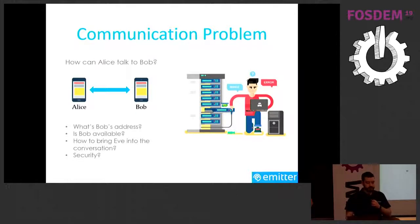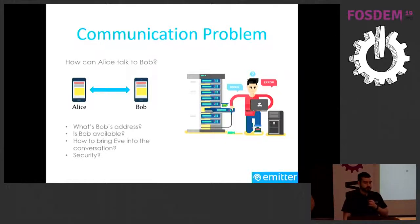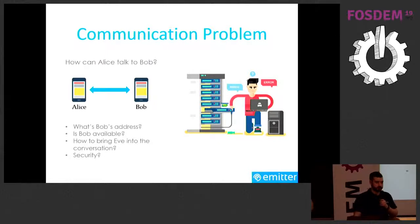More problems arise if more people want to join the conversation. In a group conversation with a third, fourth, or fifth person, everybody has to know the address of everybody else, and everybody has to remember to forward messages to everyone. Then there's authentication — we don't want just anyone who has someone's address to be able to join the conversation.